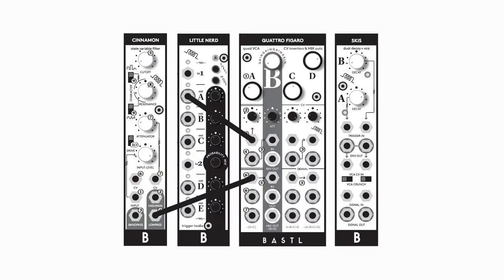Either way, the next thing to do is to patch the output of the first VCA to the input of the second VCA, which will give the decaying shape. To finish, we must patch the decay envelope into the CV input of the second VCA.